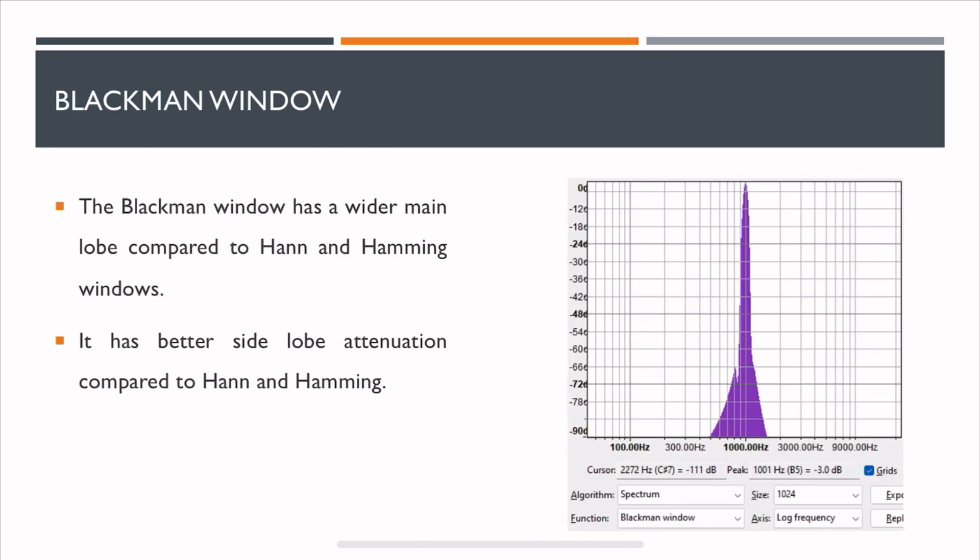The next is a Blackman window. The Blackman window has a wider main lobe compared to Hann and Hamming, but it has better side lobe attenuation compared to Hann and Hamming.